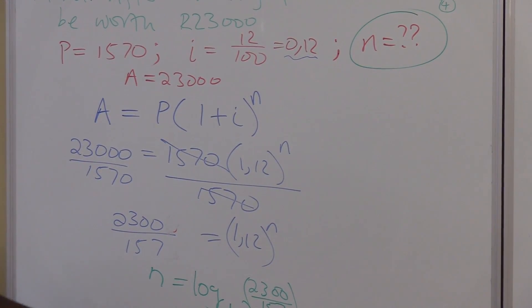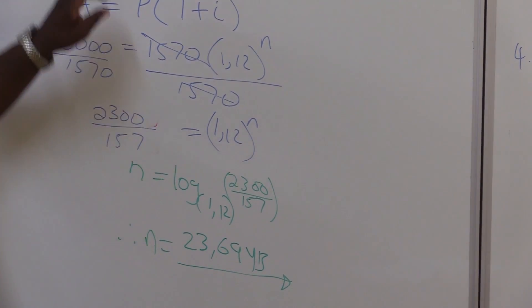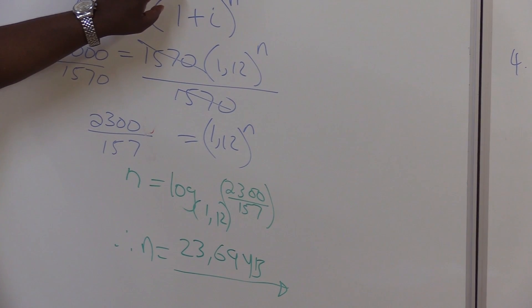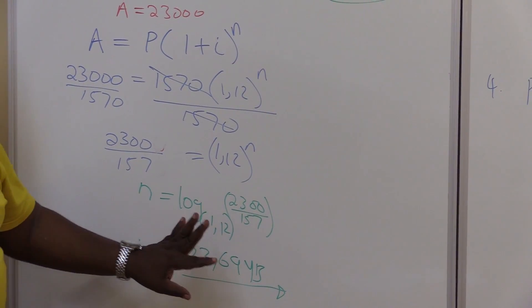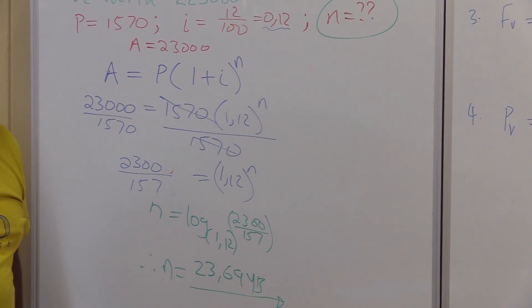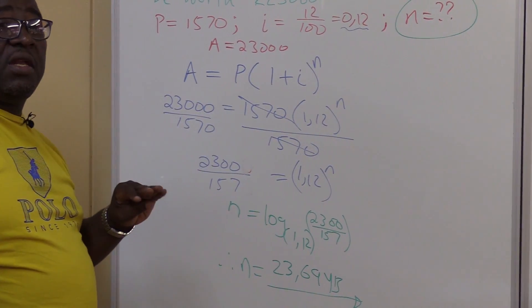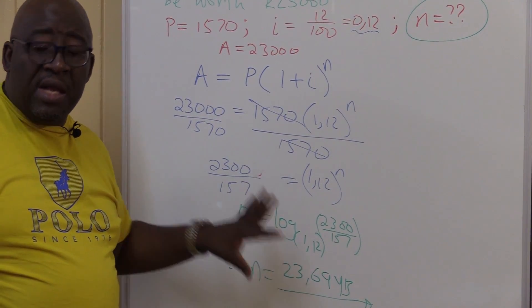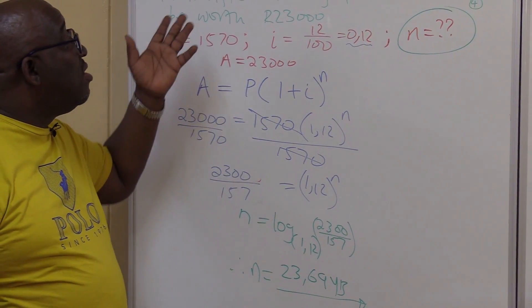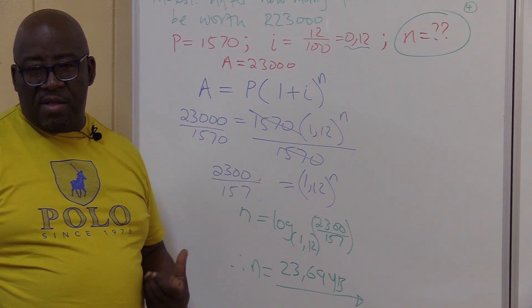It is wrong to change this into 24 years. Because once I invest this amount for more than 23 years, I'll get a value above R23,000. You don't round this off — leave it correct to decimal places. It's not going to be 24 years, because investing it more than 23 years and a few months means it will be above R23,000. So it is important that you leave it in decimal. That's how you go about solving problems on compound interest. I want us to take another problem so that we understand it further.